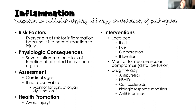Everyone is at risk for inflammation — it's a normal reaction to injury. The physiologic consequences of severe inflammation include loss of function of the affected body part or organ. For example, with cholecystitis the gallbladder is dysfunctional and often needs to be removed. Assessment includes the cardinal signs, but if inflammation is not observable, we monitor for signs of organ dysfunction through physical signs and symptoms, vital signs, and laboratory studies.